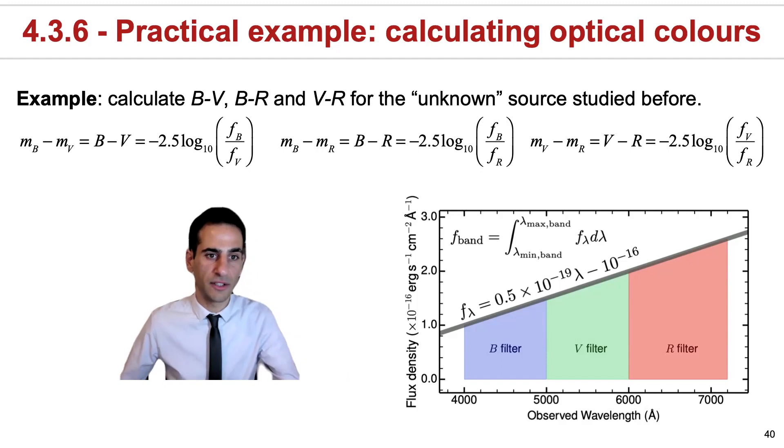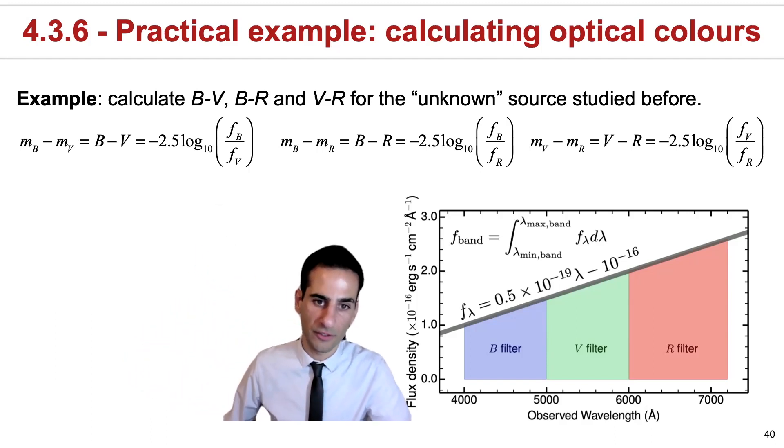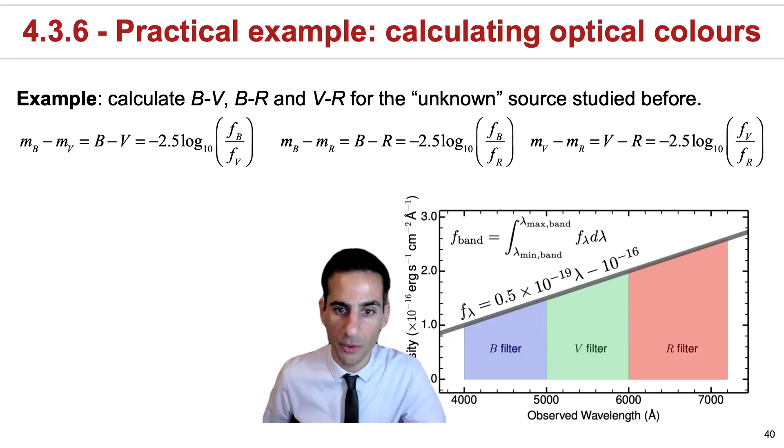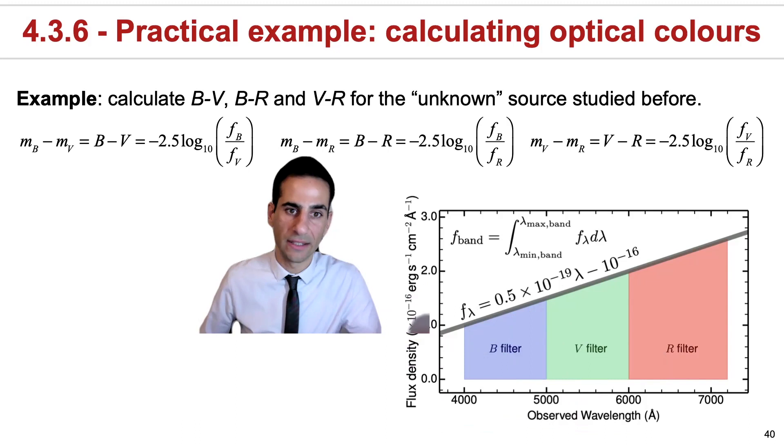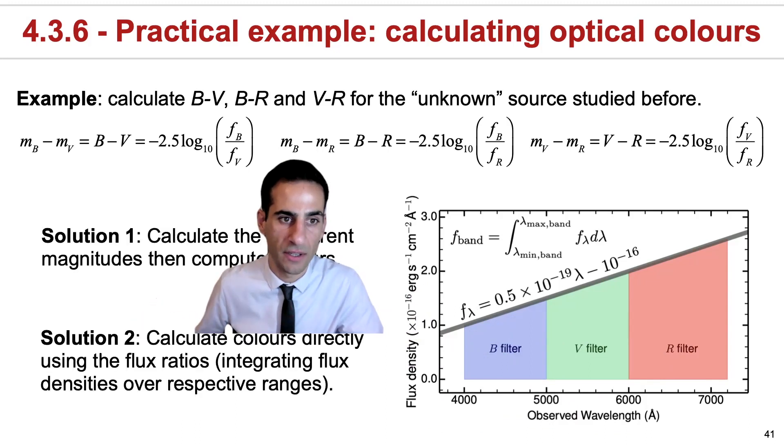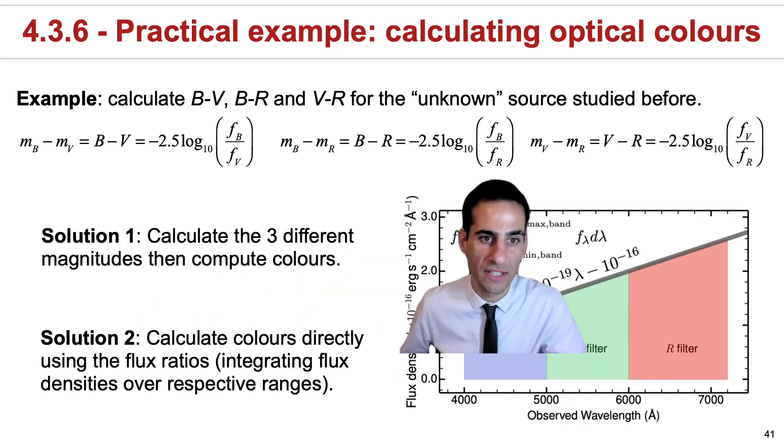If you want to calculate colors using fluxes, all you have to do is repeat one of the first examples we did. You do it for the B band, then for V and then R, and then you just subtract.